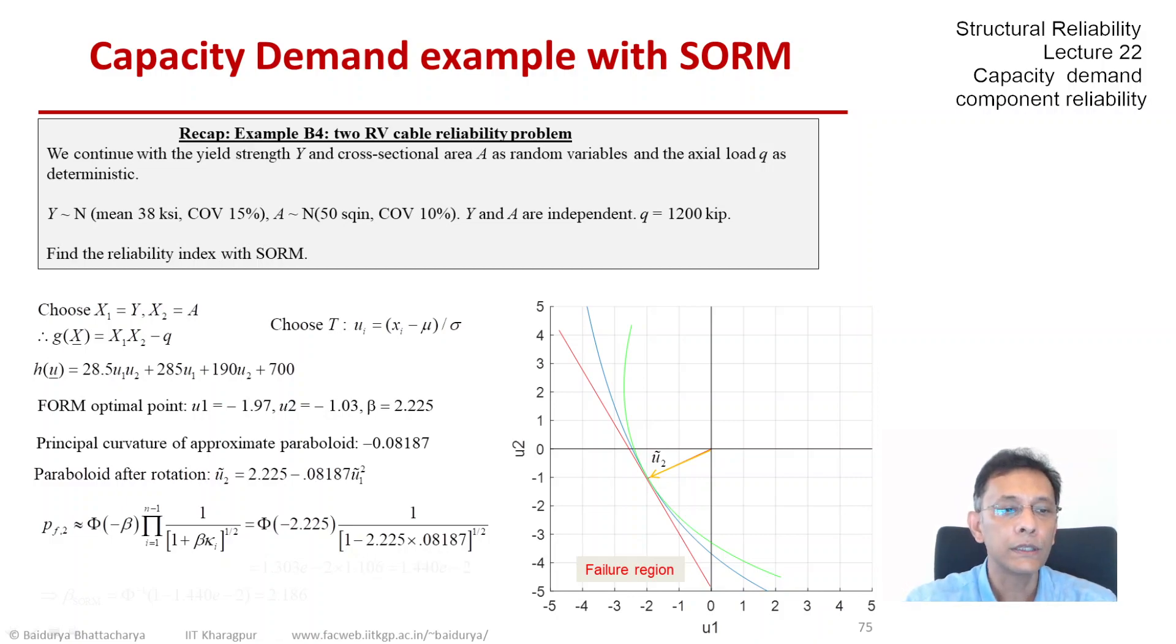And now we just apply the formula systematically. So we have this time a correction factor which is more than 1, 1 divided by the square root of a number which is less than 1.